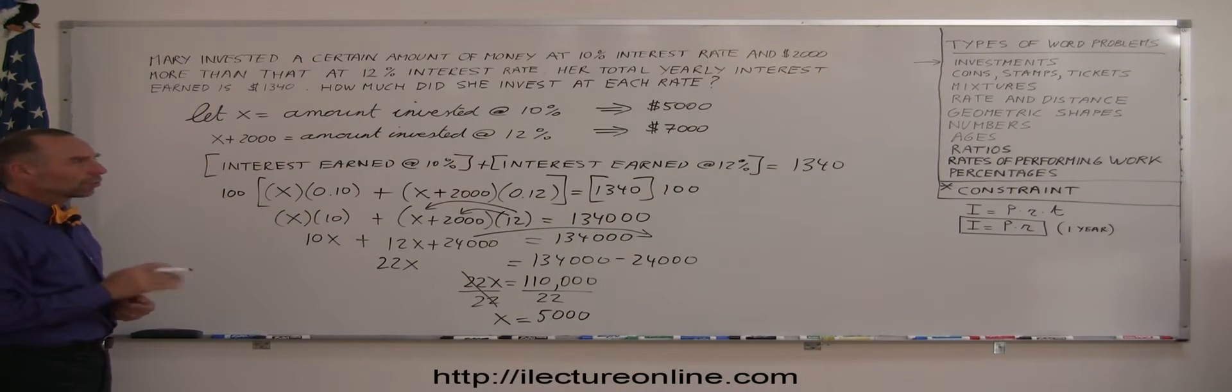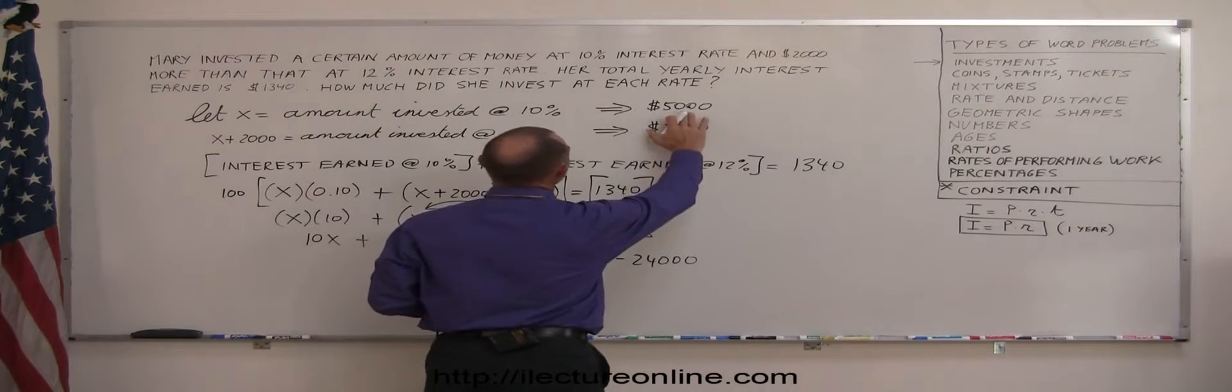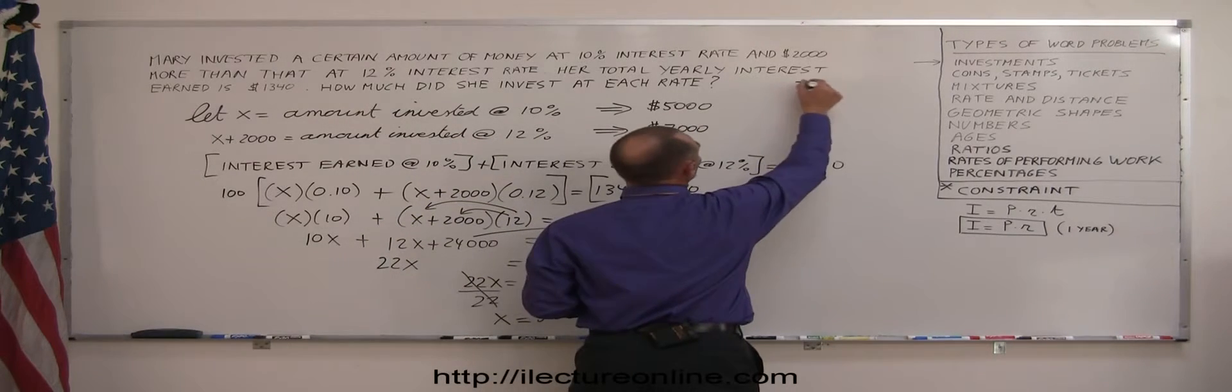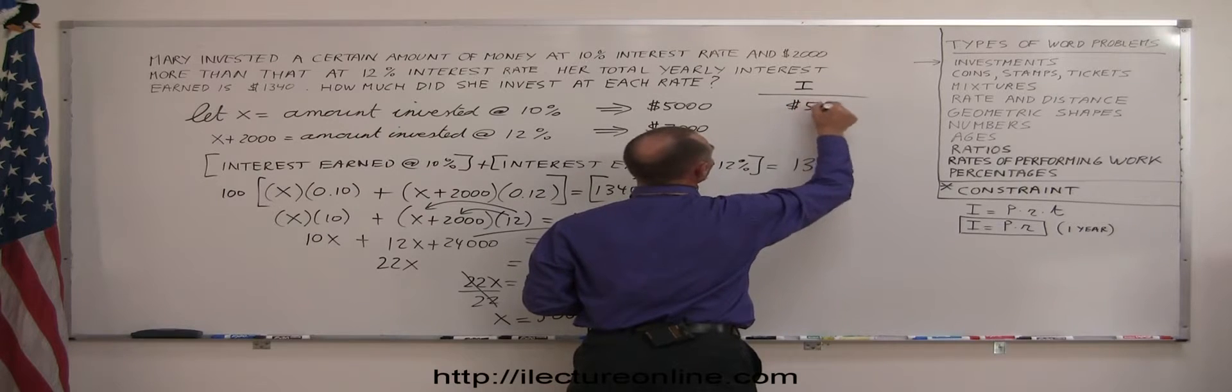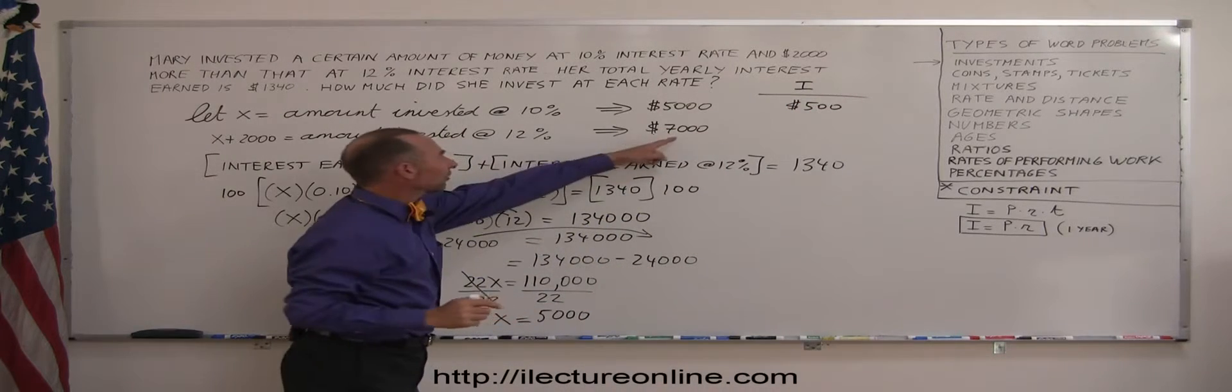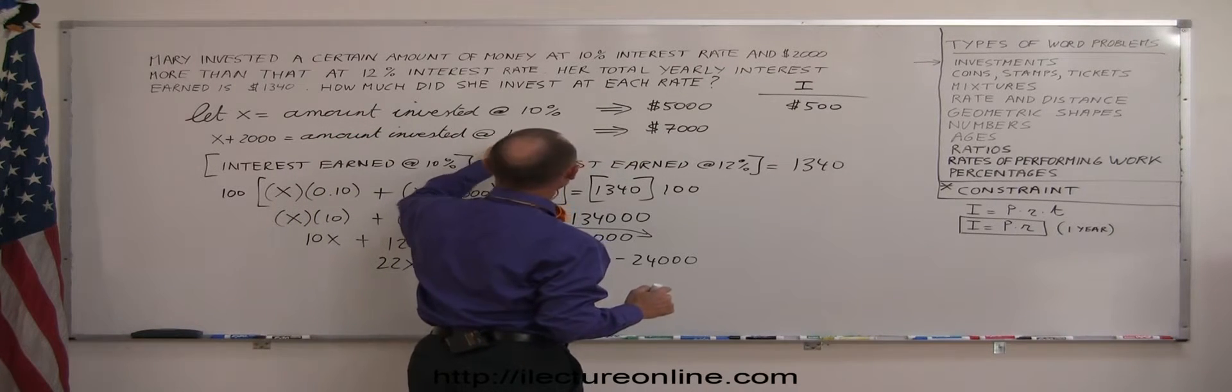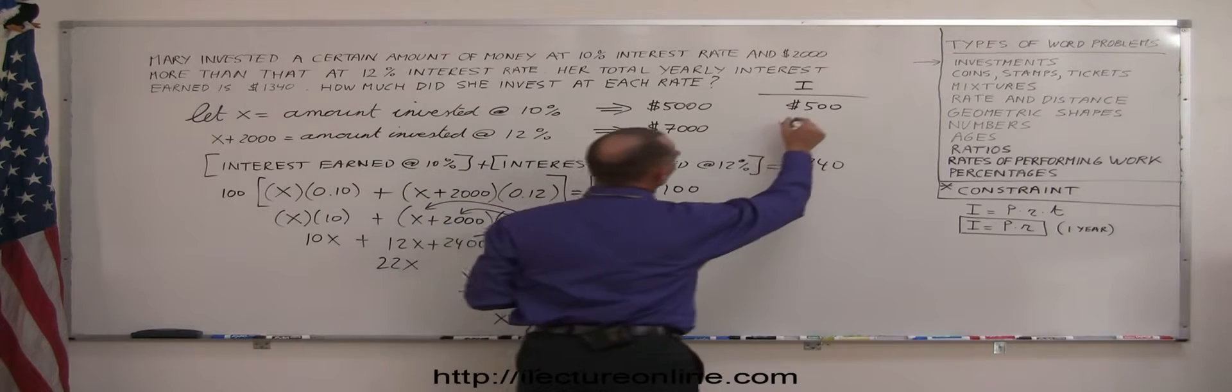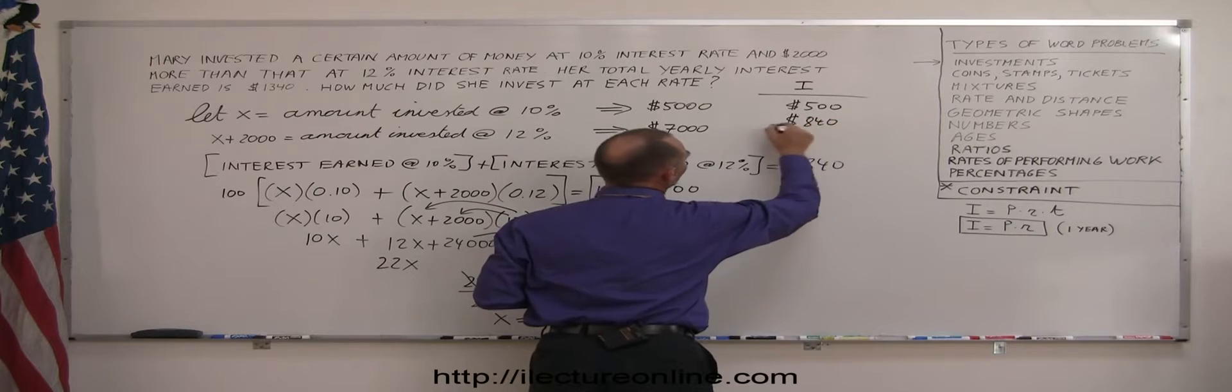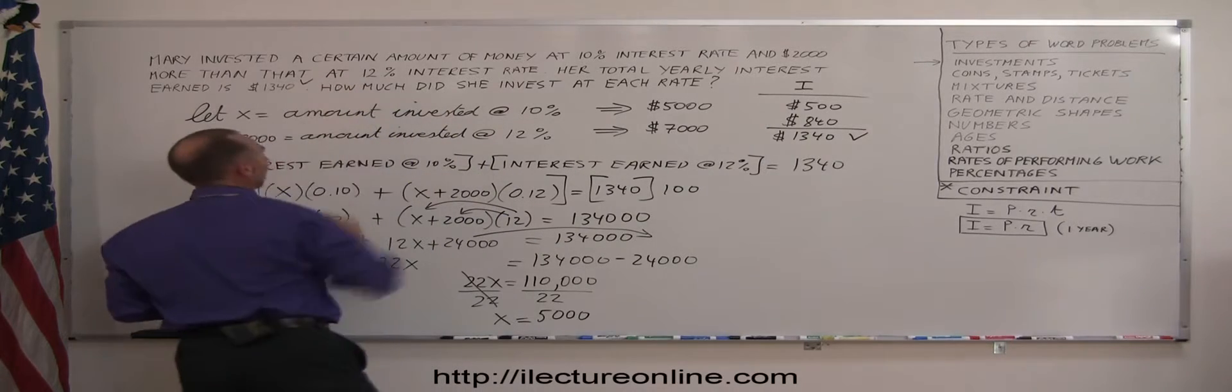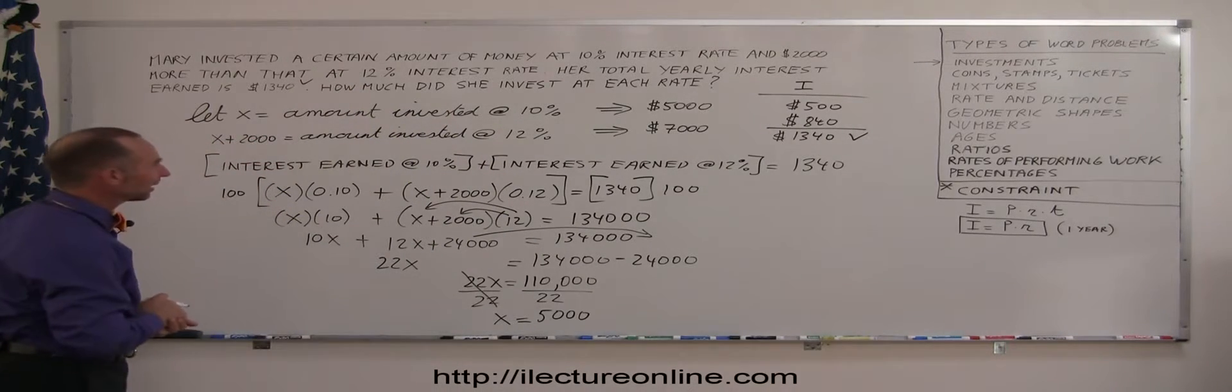If you want to make sure you did this correctly, you can check yourself by calculating how much you earned at each. So $5,000 at 10% interest, 10% is 1/10 of 5,000, that means the interest earned would be $500. And $7,000 at 12%, 7 times 10% is 700, 7 times 2% is 140, that would be $840. If I add them together, sure enough, $1,340, which is correct. That means I did the problem correctly.